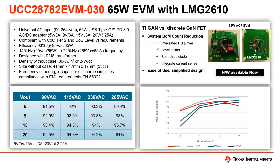We already have an EVM available on TI.com that you can order a sample of today — the UCC28782 EVM. This is the EVM for the controller that the LMG2610 is built around, so it's essentially our EVM for ACF solutions. It is already available, and we've taken a number of different efficiency numbers across a universal AC input as low as 90 volt AC to 265 volt AC across several different output voltages you would typically see in a PD 3.0 converter.